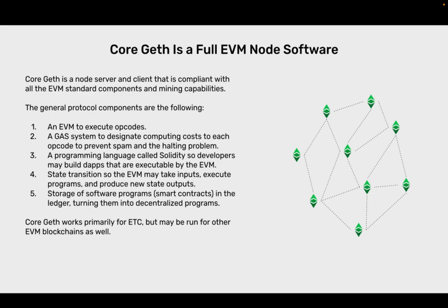CoreGeth is a full EVM node software. CoreGeth is a node server and client that is compliant with all EVM standard components and mining capabilities. The general protocol components are: one, an EVM to execute opcodes; two, a gas system to designate computing costs to each opcode to prevent spam and the halting problem; three, a programming language called Solidity so developers may build dApps that are executable by the EVM; four, state transition, so the EVM may take inputs, execute programs and produce new state outputs; five, storage of software programs, smart contracts, in the ledger, turning them into decentralized programs. CoreGeth works primarily for ETC but may be run for other EVM blockchains as well.